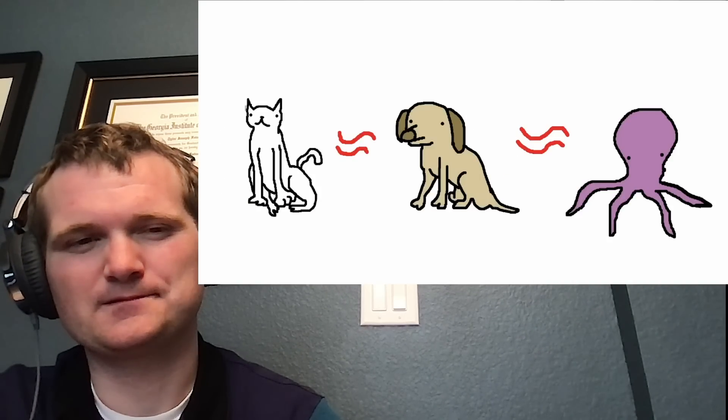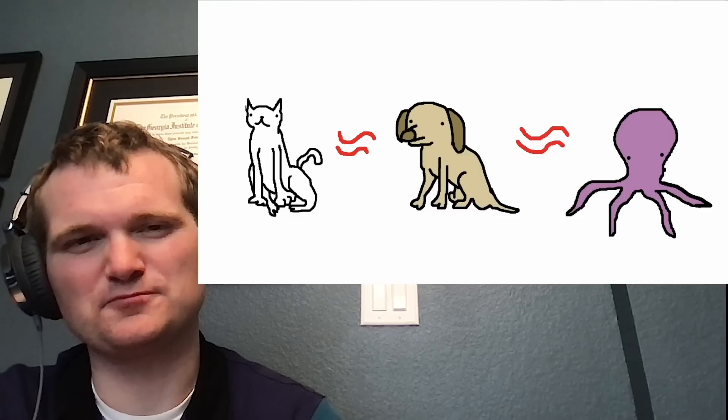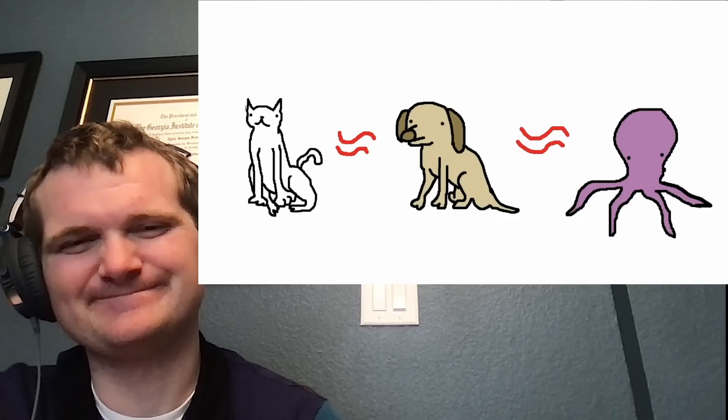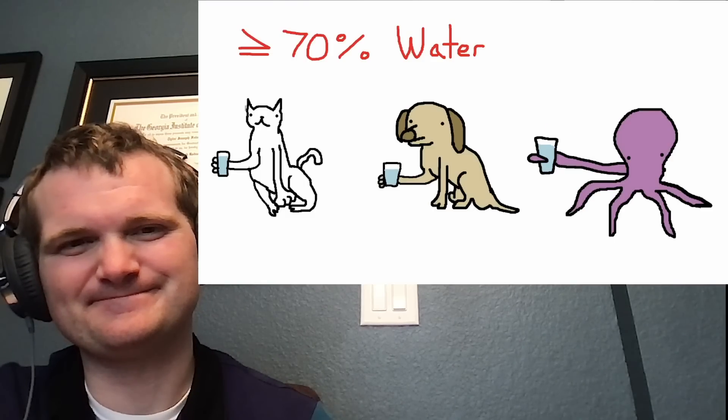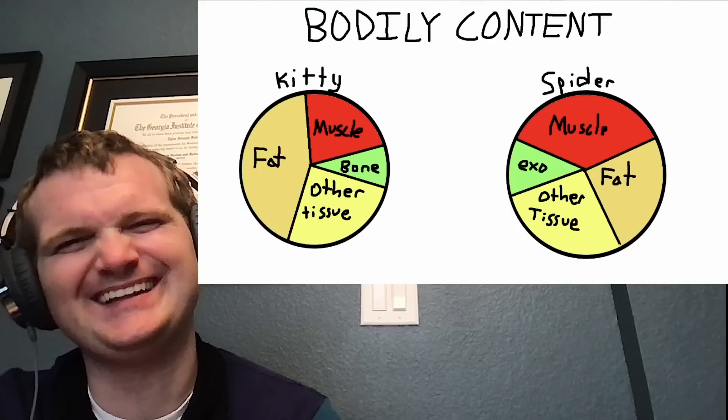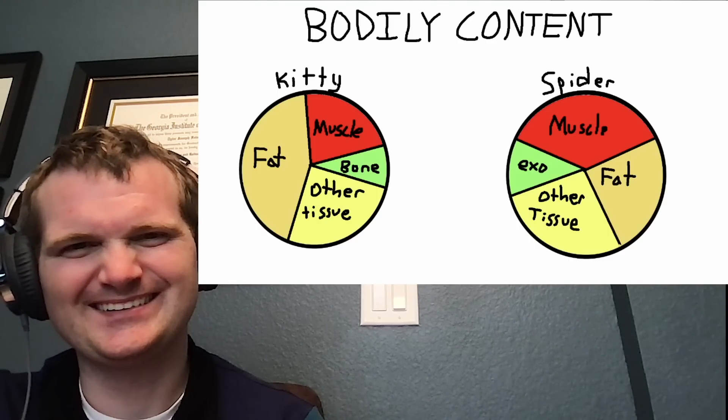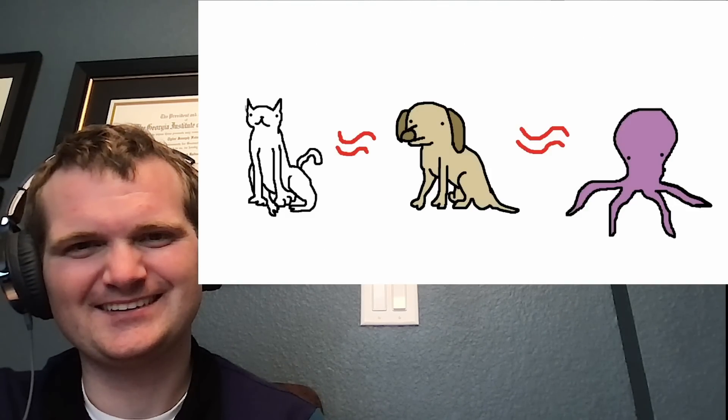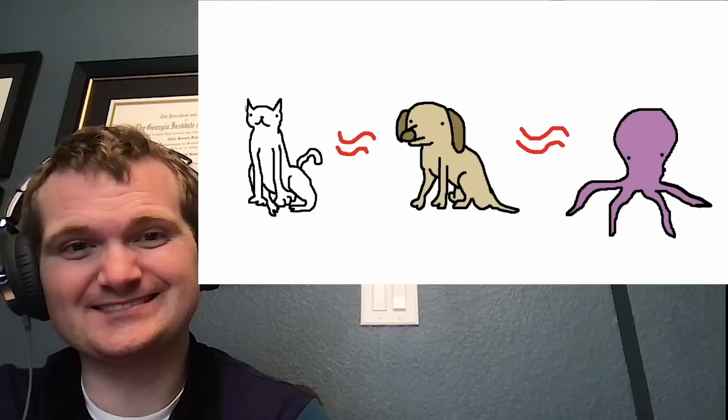Fortunately, the density of all animals is quite similar, partly due to the fact that the vast majority of creatures are at least 70% water by weight. Couple that with the fact that the ratio of fat, muscle, and bone or exoskeleton in all creatures is at least vaguely similar, and we can estimate the density of all animals to be around the same.